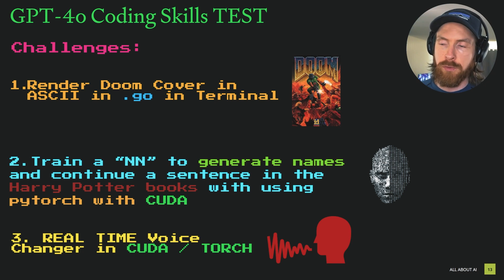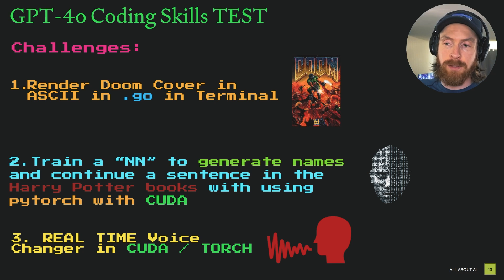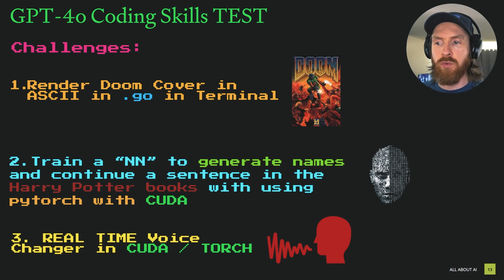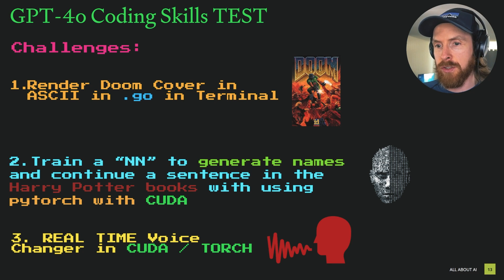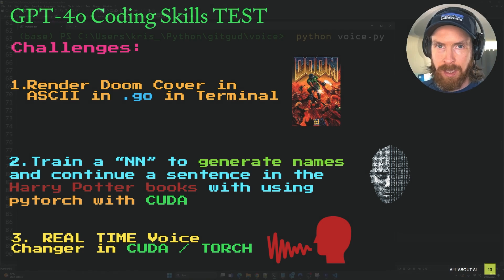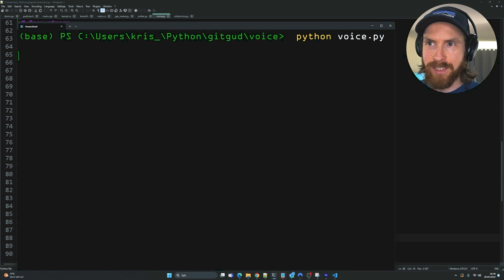For the neural network we'll be using PyTorch, probably with CUDA to speed it up. The final challenge is pretty cool — making a real-time voice changer using CUDA and PyTorch. So this must be in real time.